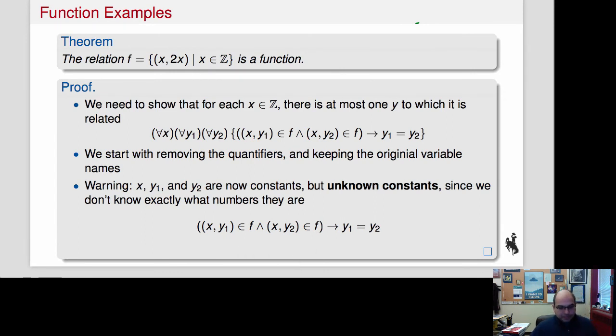So I told you that f(x) = 2x, or the set f that contains {(x,2x) | x ∈ Z}, is a function. Now it's time to prove that. I mean, I just claimed that, and probably most of you believed me, but I didn't actually prove that it was. So we have to do that.